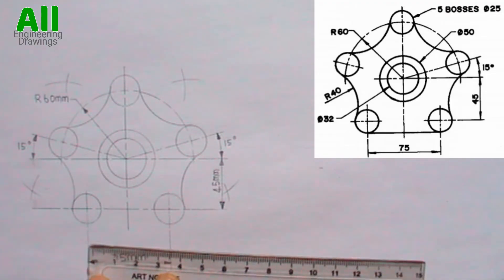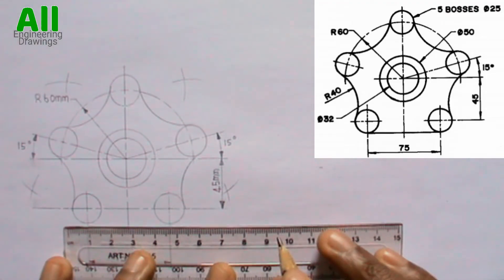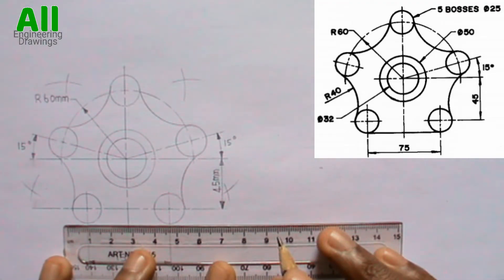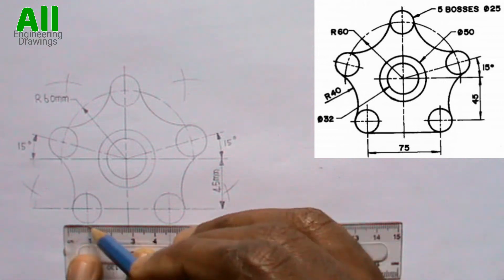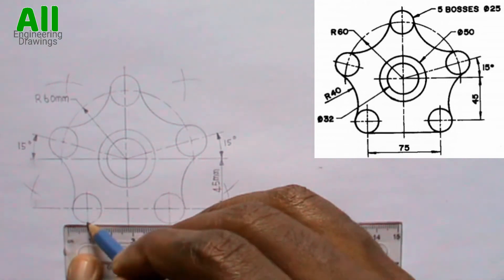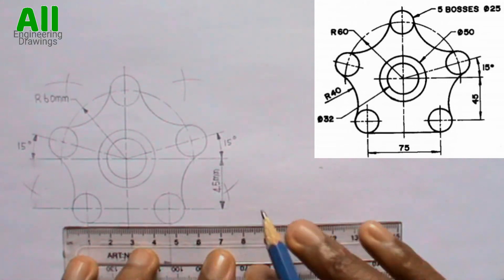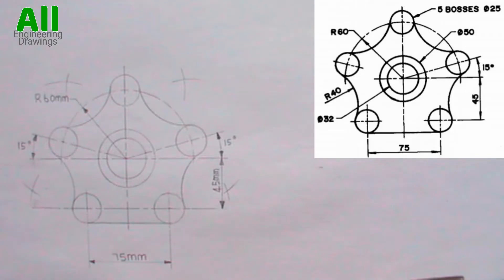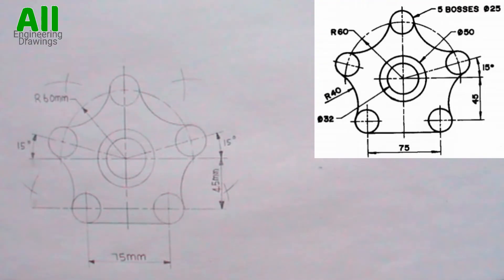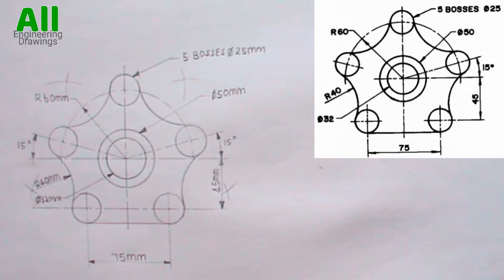Now draw a line this way. The line should touch the bottom of these two circles. Make bold the parts that are supposed to be bold and complete the dimension. The above tangency has been drawn successfully.